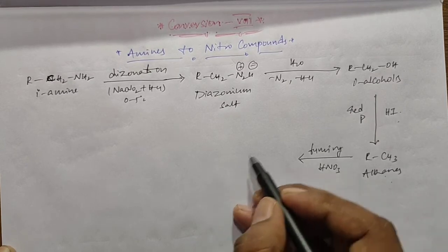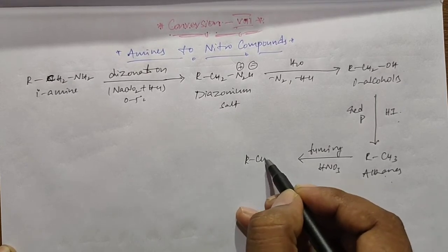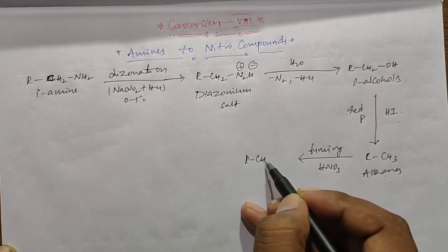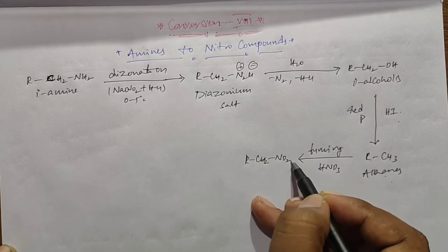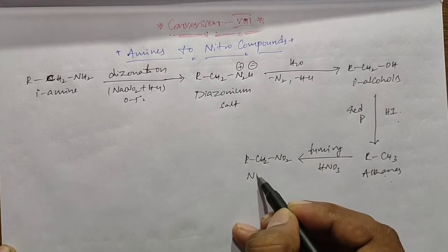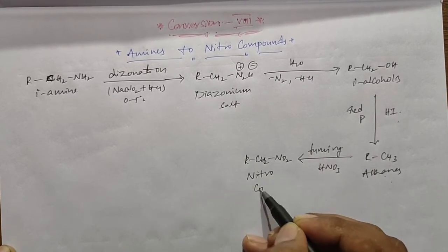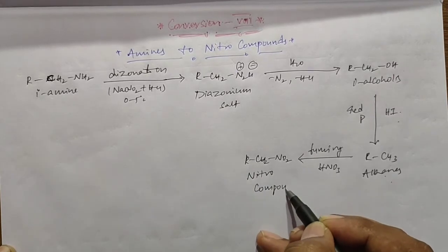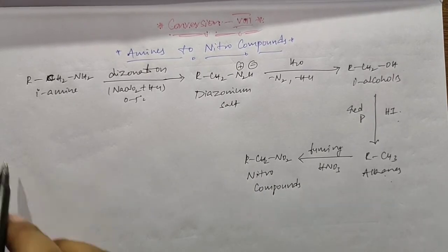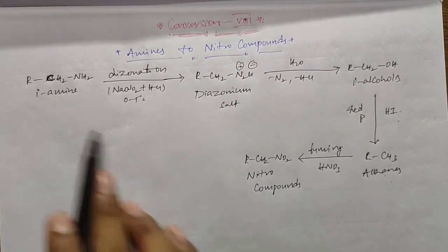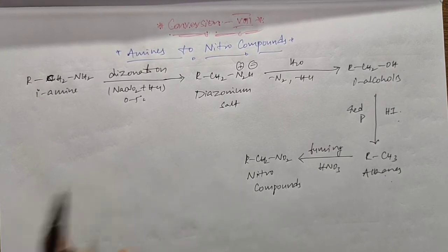The alkanes react with fuming nitric acid and form the nitro compounds. This is the complete pathway to convert amines to nitro carbons.